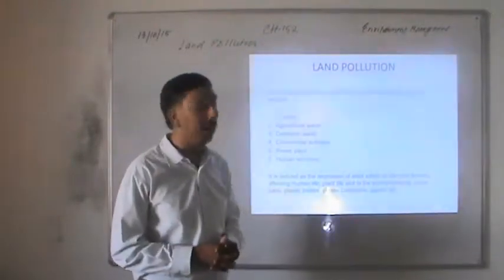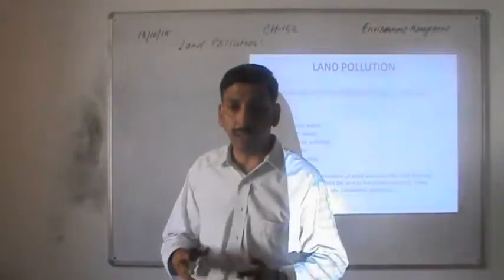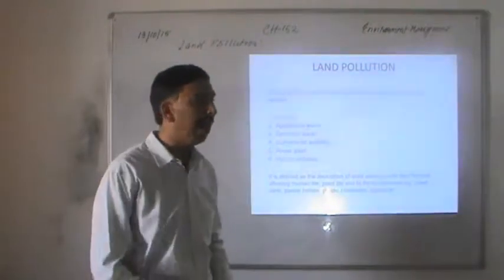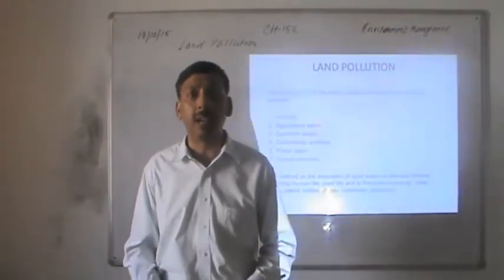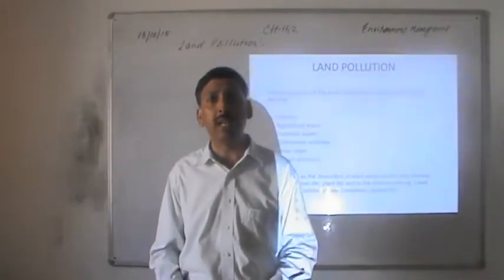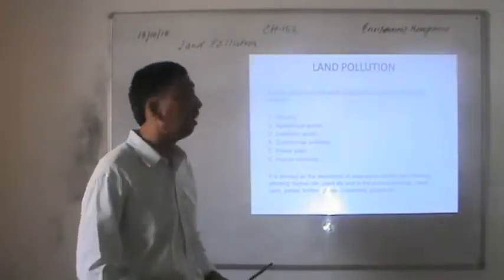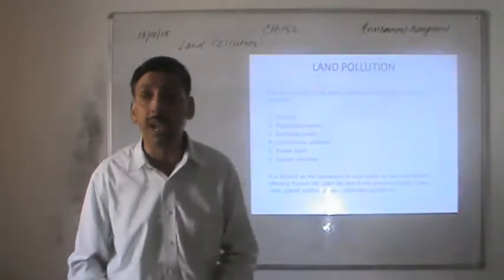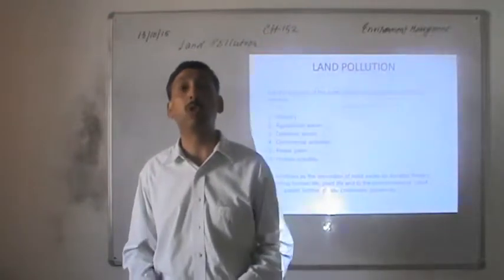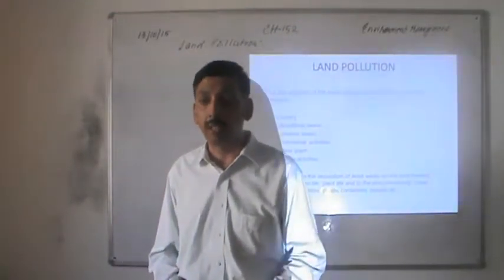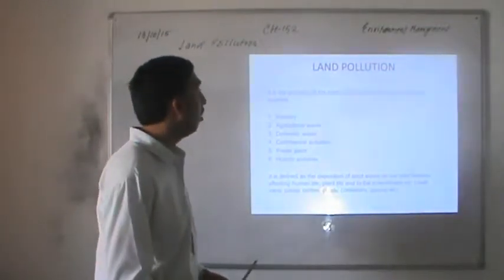Today I am going to discuss about land pollution. In the definition part we have already discussed that any substance if it exceeds beyond a certain limit and affects human life, plant life, and the environment, then it is known as pollution. In terms of land pollution, it means the pollution of the earth's natural land surface from various sources. So what are the major sources through which land pollution is caused?